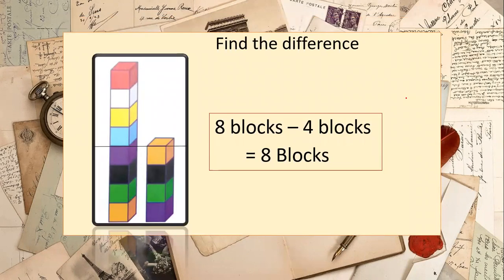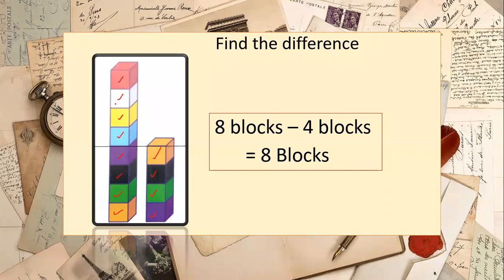Next, we have to find the difference using blocks. Counting the blocks at the first position: 1, 2, 3, 4, 5, 6, 7, and 8 — so 8 blocks. The second position has 1, 2, 3, and 4 blocks. Similarly, you draw a line through the matching number of blocks. Whatever is left over is the difference. So 8 blocks minus 4 blocks equals 4 blocks. The difference is 4.